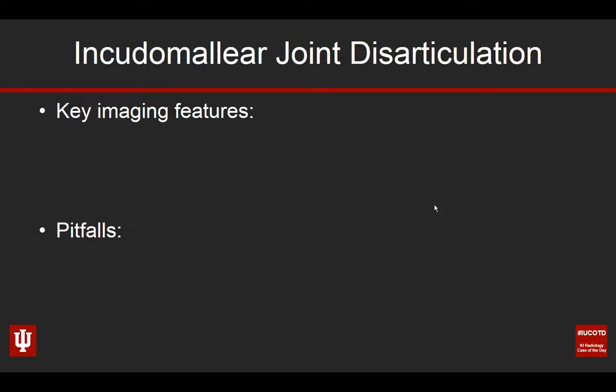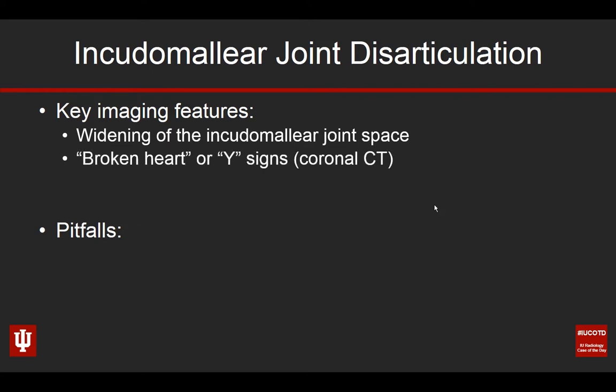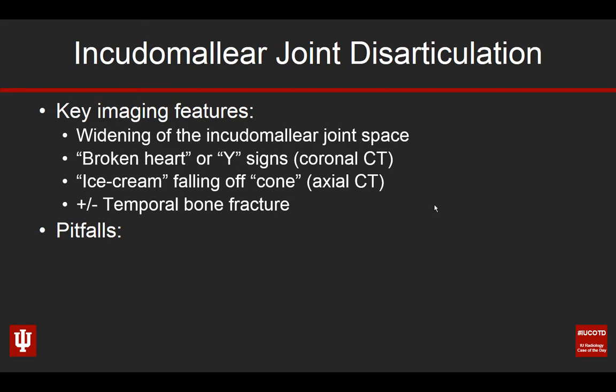To wrap this up: this was a case of incudomallear joint disarticulation in the setting of trauma. The key imaging feature to look for is widening of the incudomallear joint space. On coronal CT, that will manifest as the broken heart or Y sign. On axial CT, that may present as the ice cream — the head of the malleus — falling off the ice cream cone, which is the short process of the incus, and it may be only minimally displaced. Always be on the lookout for associated temporal bone fractures.